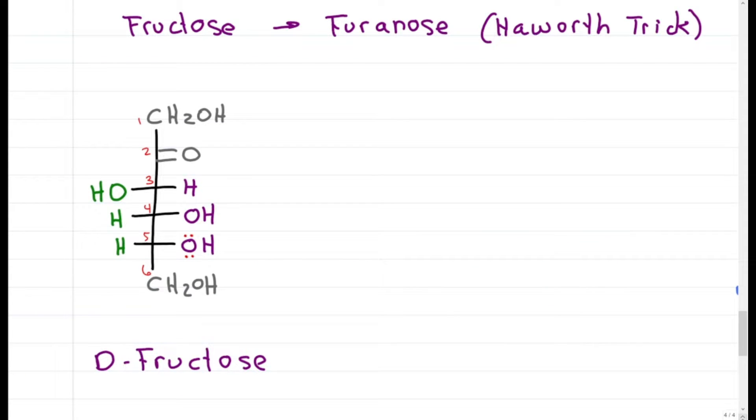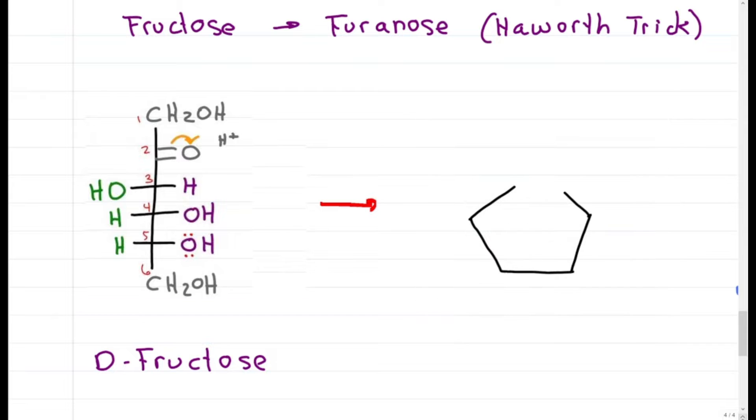But since we already saw the pyranose, let's see what happens when carbon 5 attacks the carbonyl and forms a 5-membered ring. We'll apply this same trick as before with a 5-membered ring, with two major differences. One, we have an oxygen at the top, and two, we put carbons 3 and 4 at the bottom.